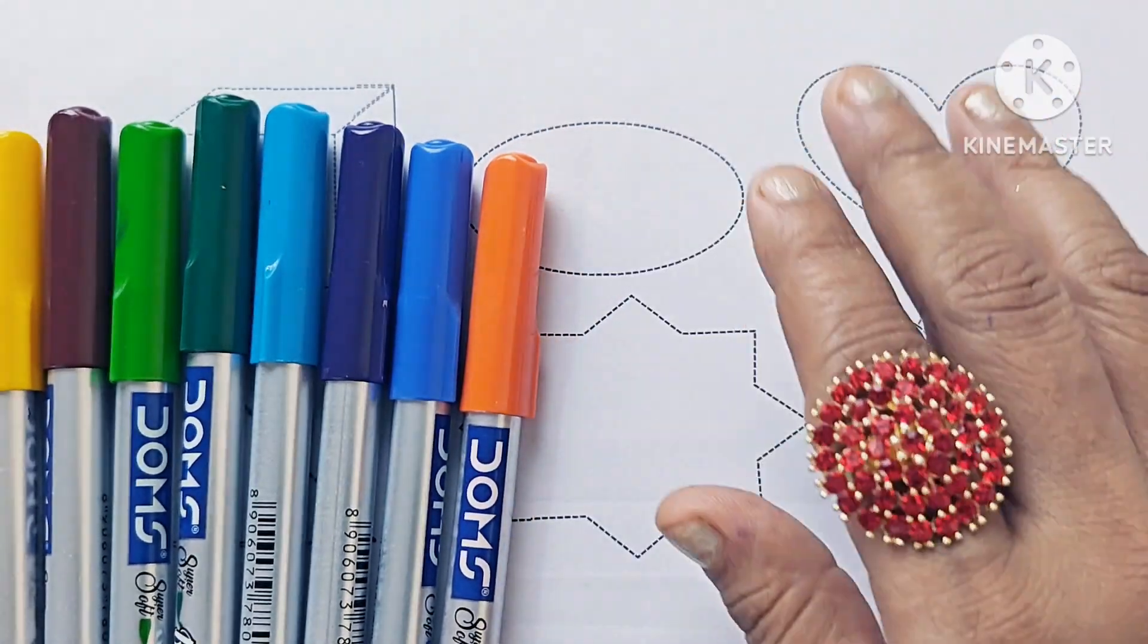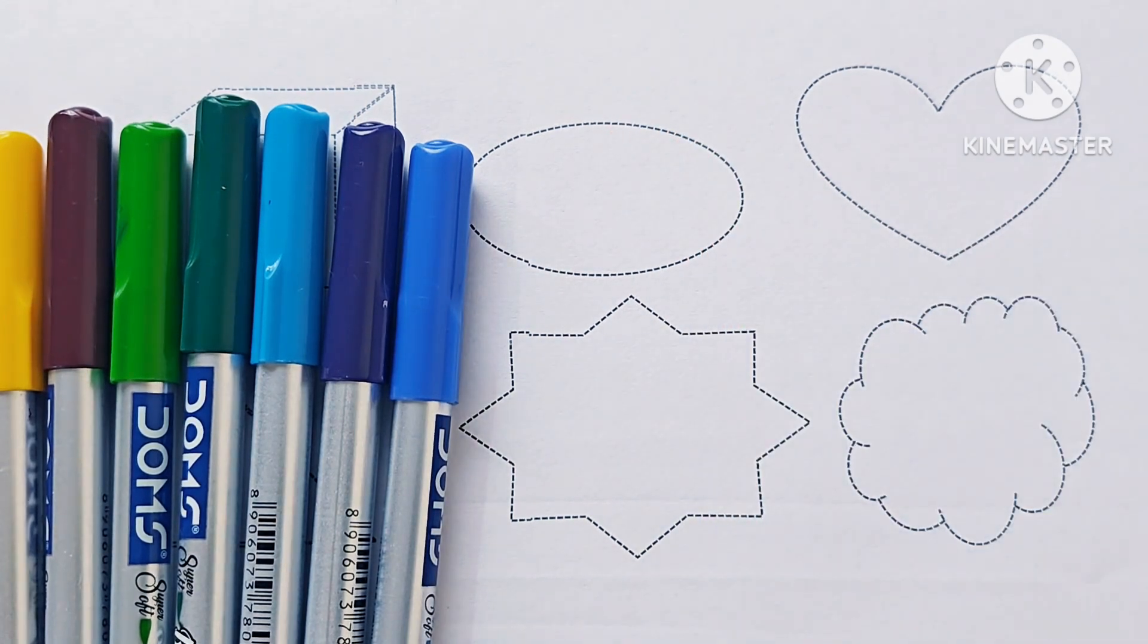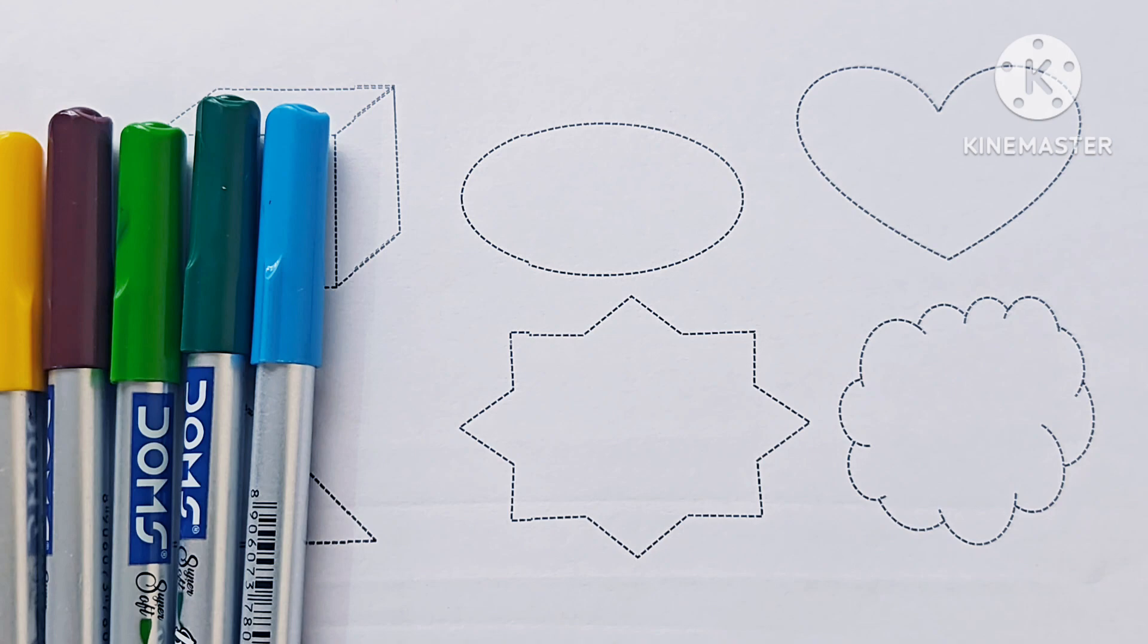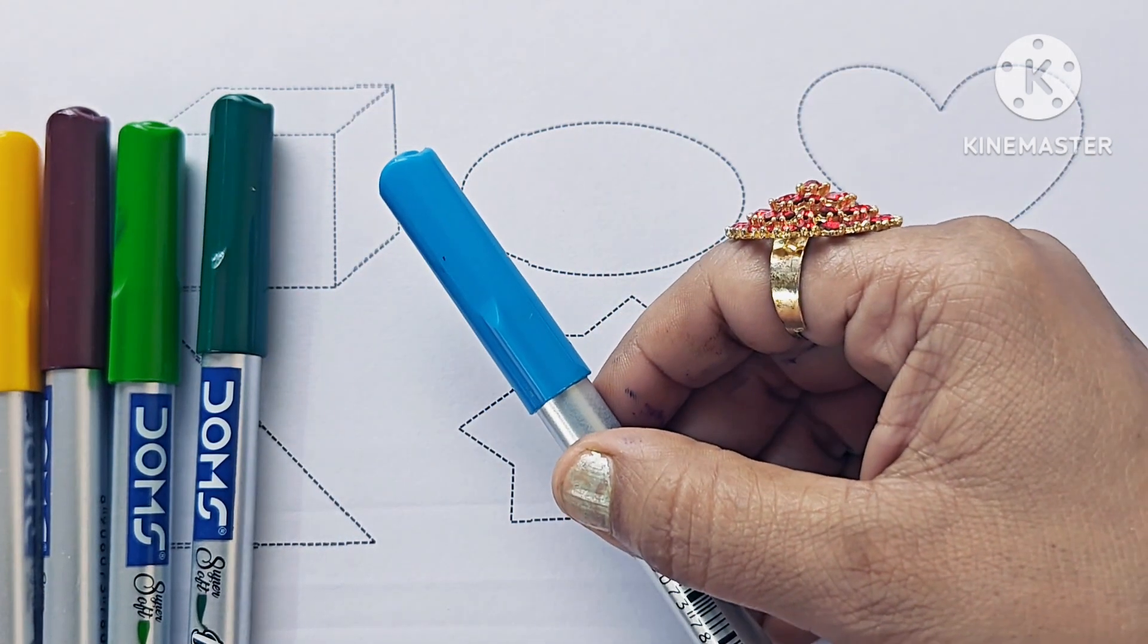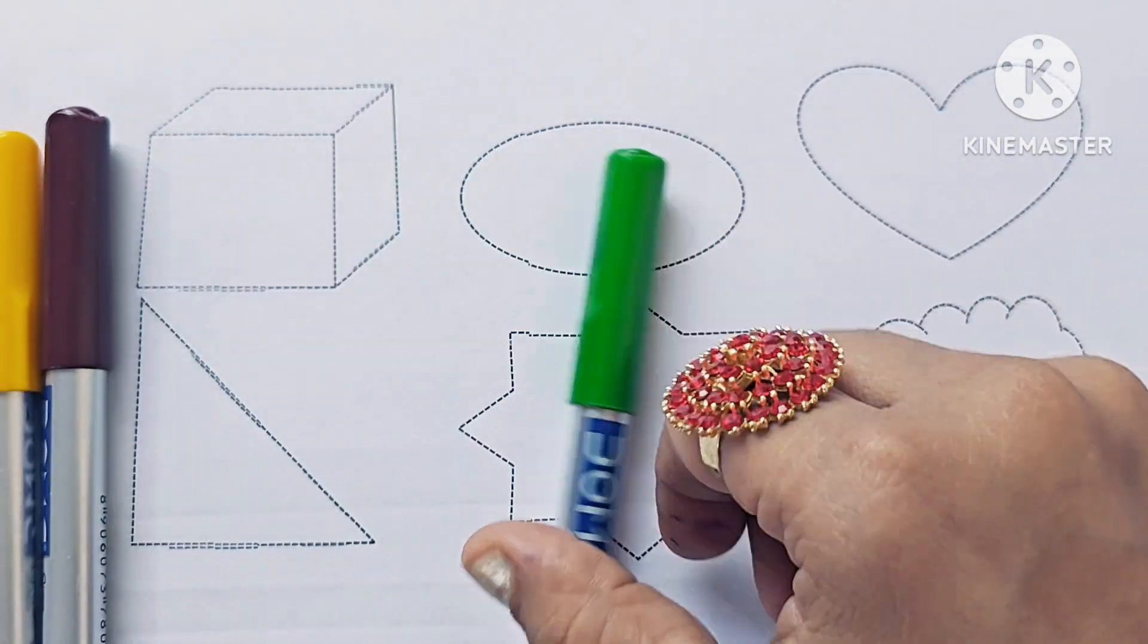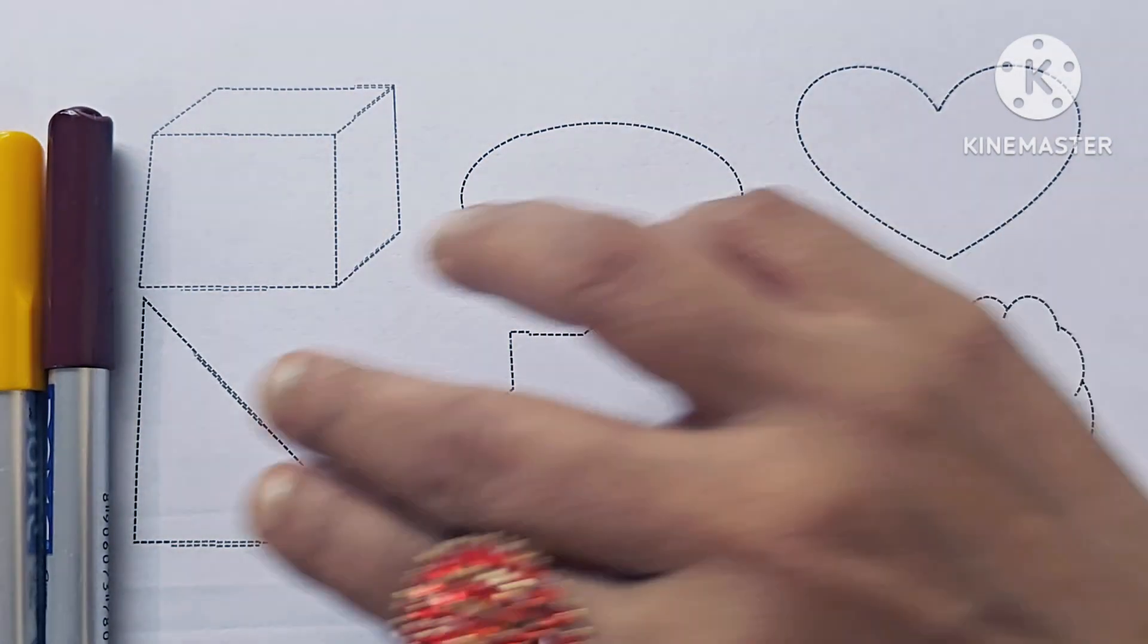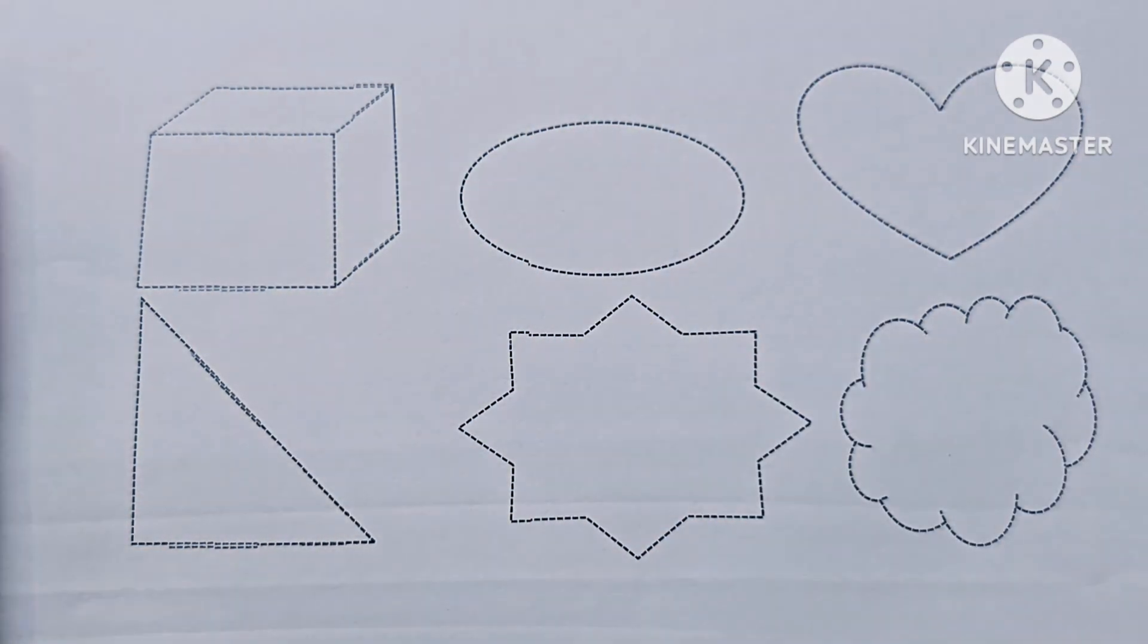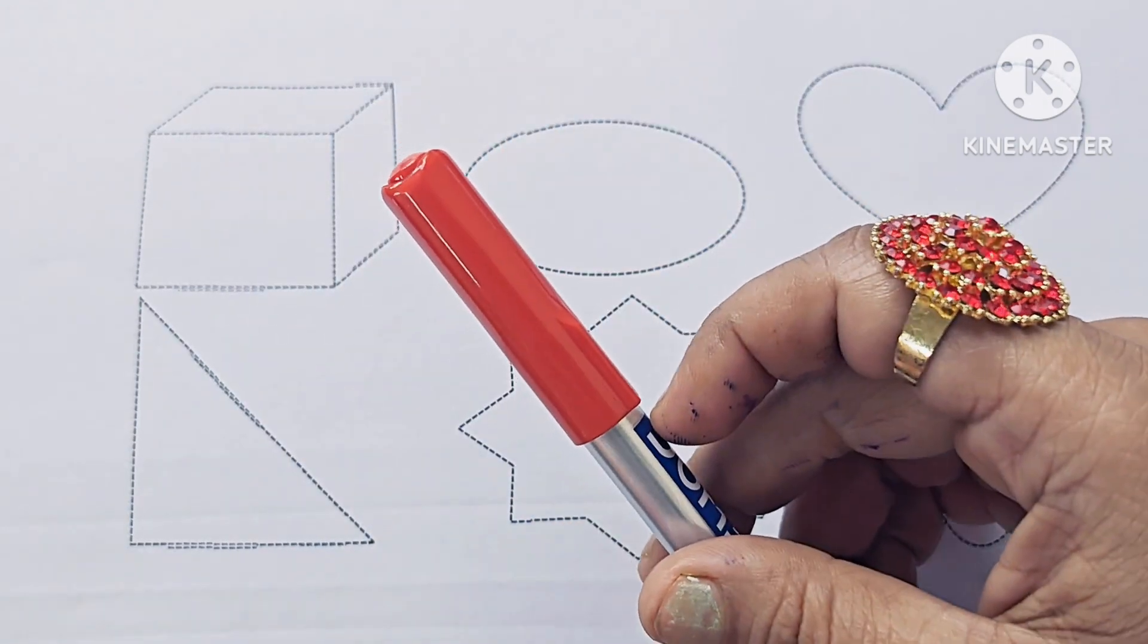Let us know about the color names. This is Orange, Blue, Purple, Sky Blue, Green, Light Green, Brown, Yellow, Pink, Red.